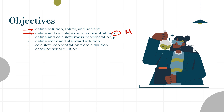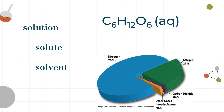In grade 10 chemistry we used big M for molar — same idea here. We're going to define and calculate mass concentration, represented by the Greek letter rho. We'll define stock and standard solutions, use those stock solutions to calculate dilutions, and wrap up with a look at serial dilutions.